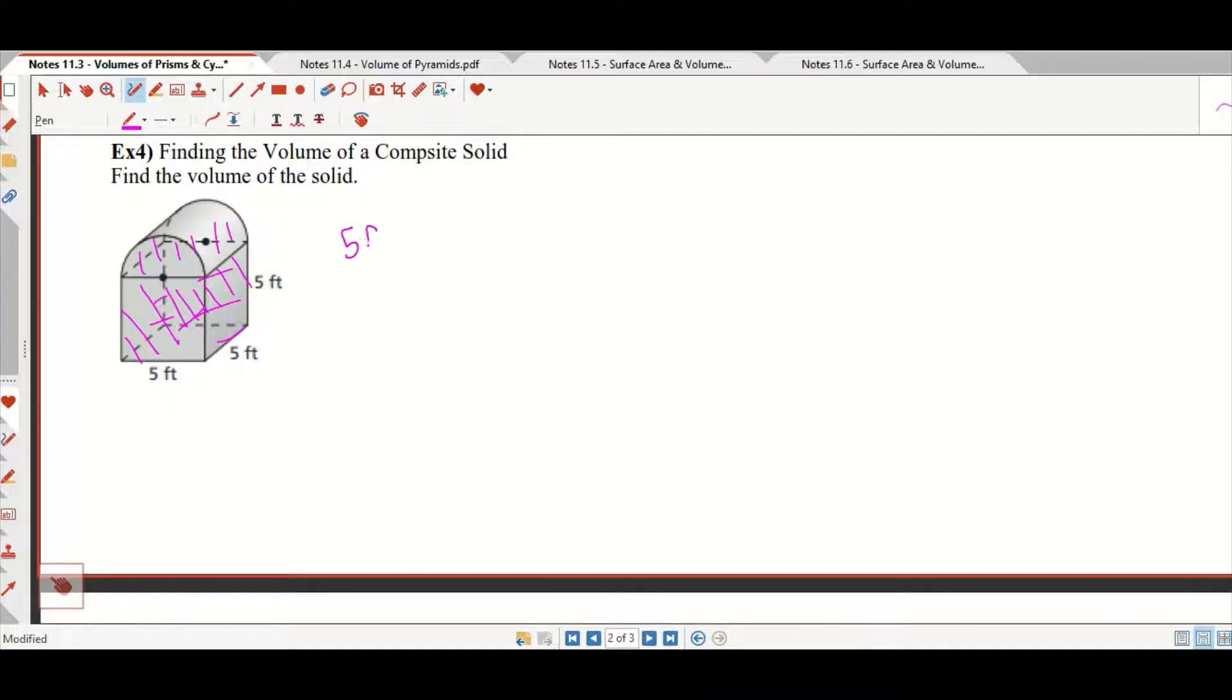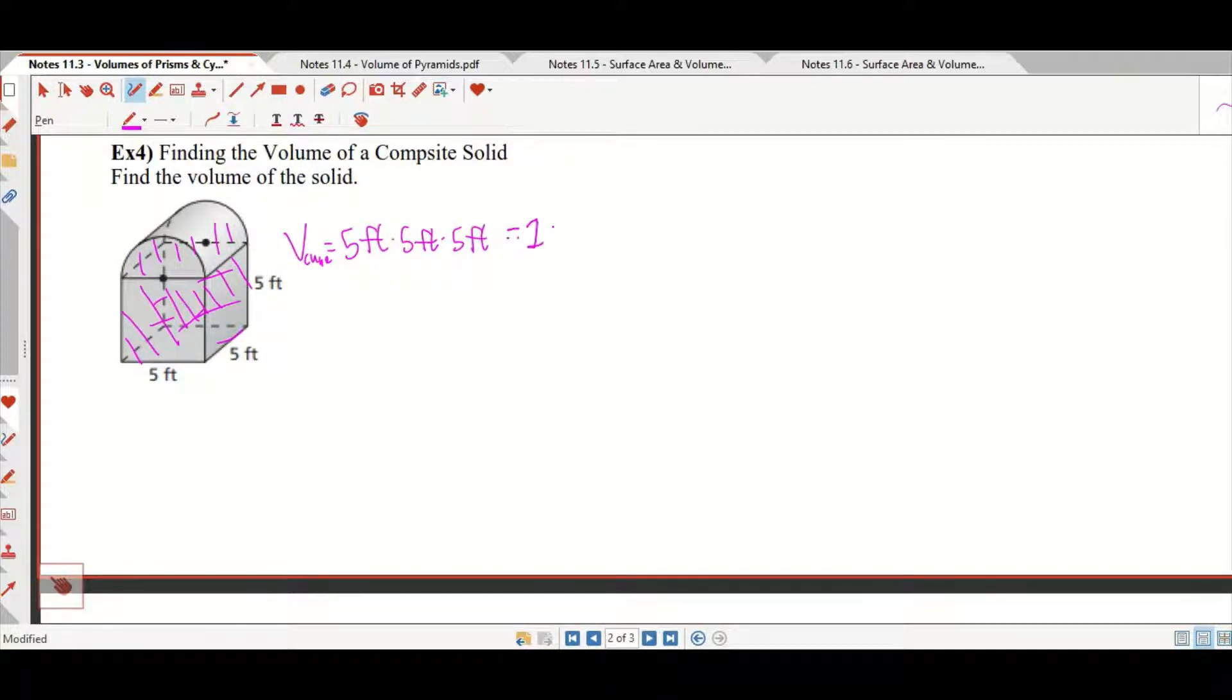Let's go ahead and start with the cube. The cube is 5 feet times 5 feet times 5 feet, the volume of the cube. And 5 times 5 times 5 is 125, so that's 125 feet cubed.